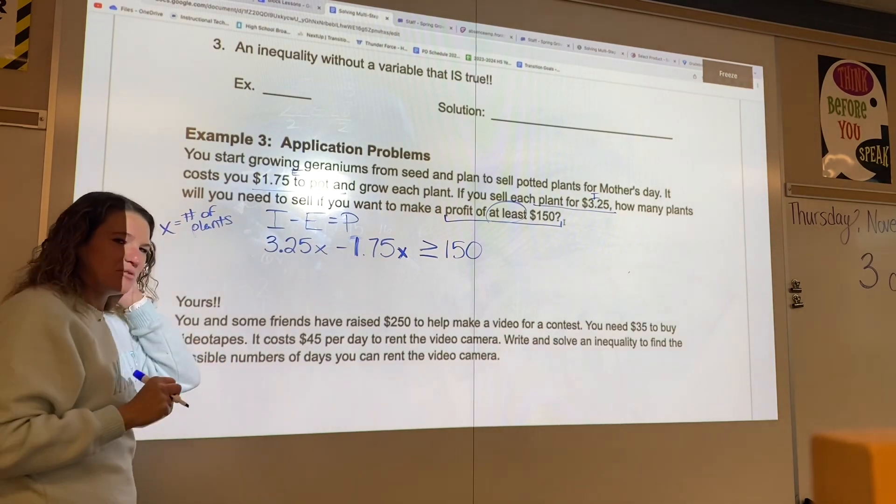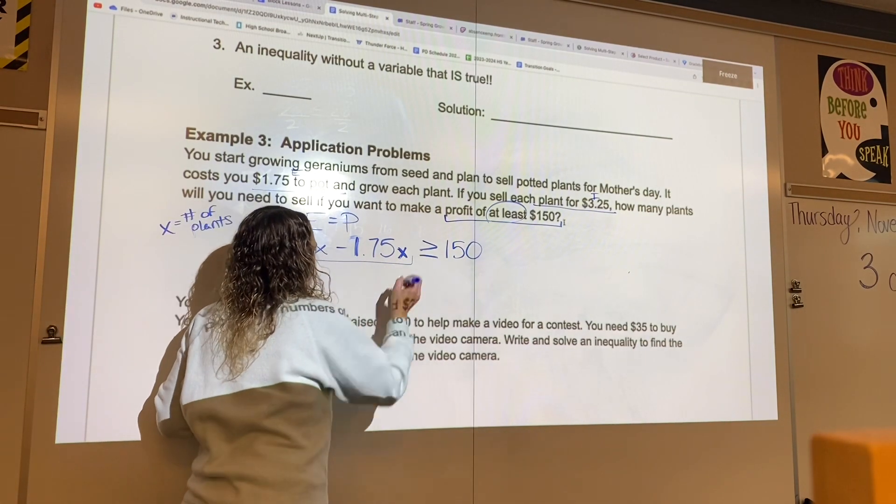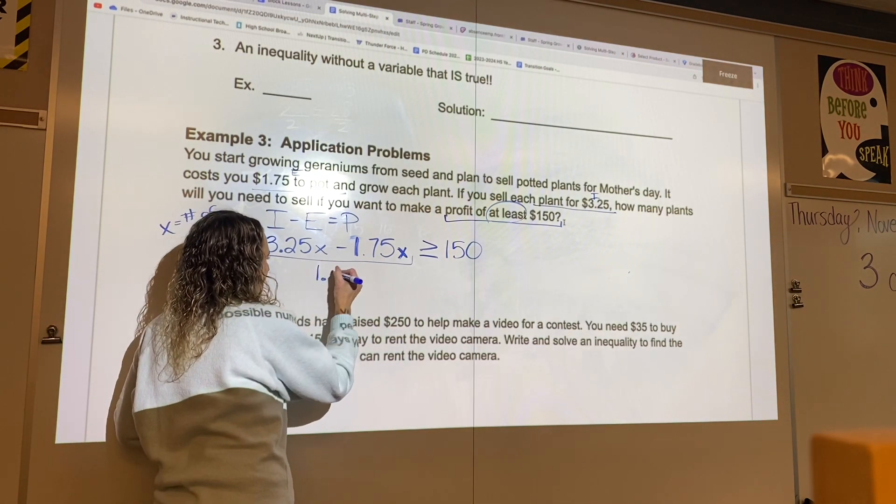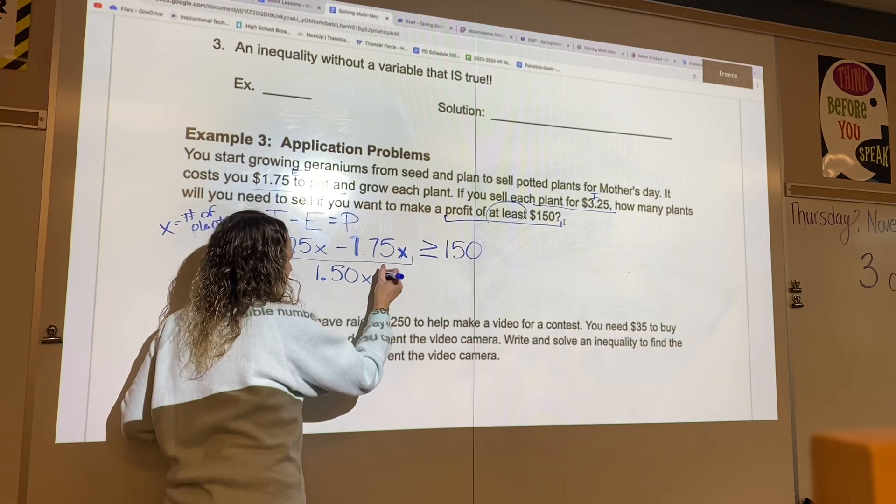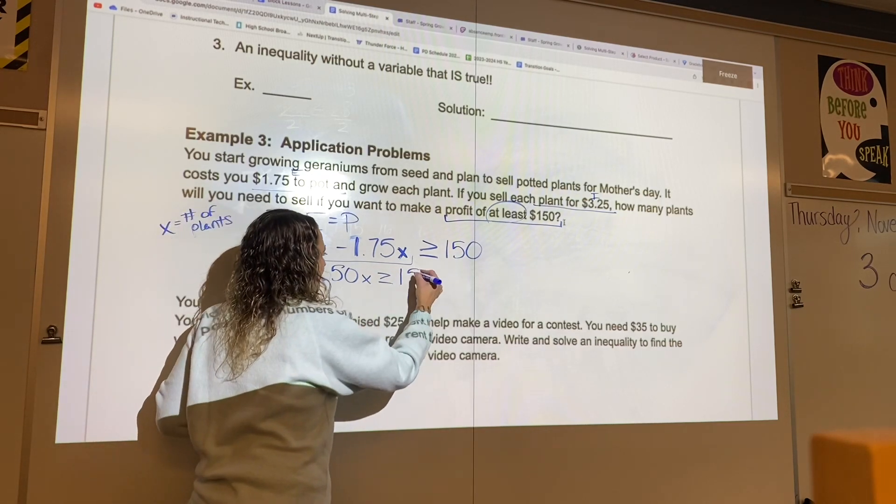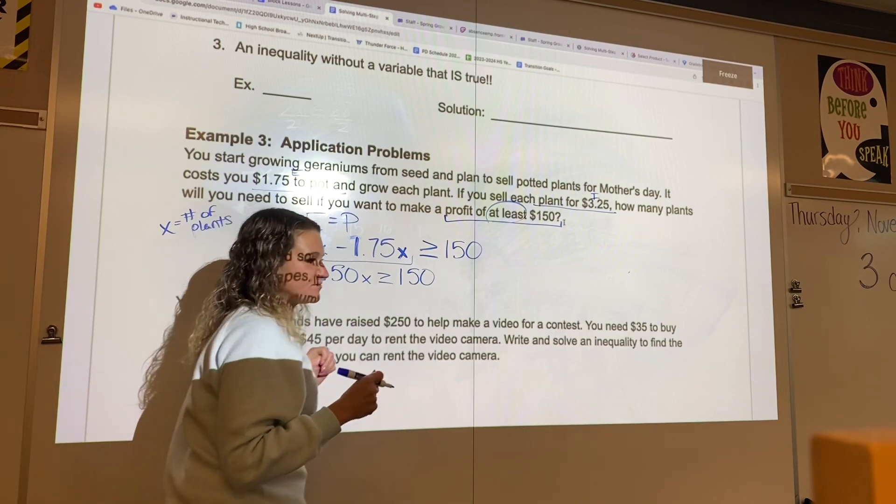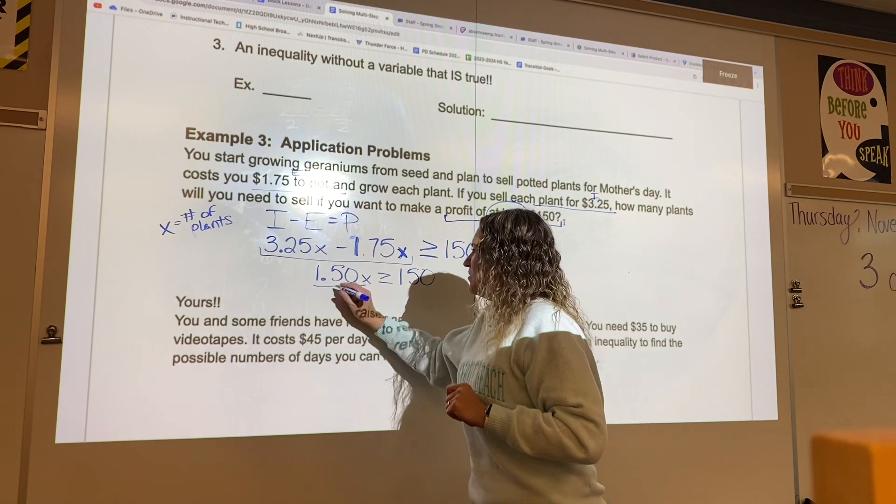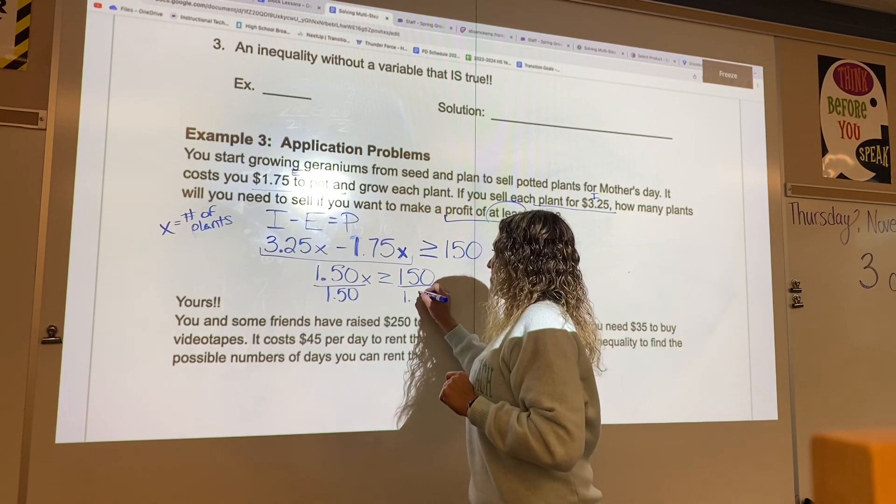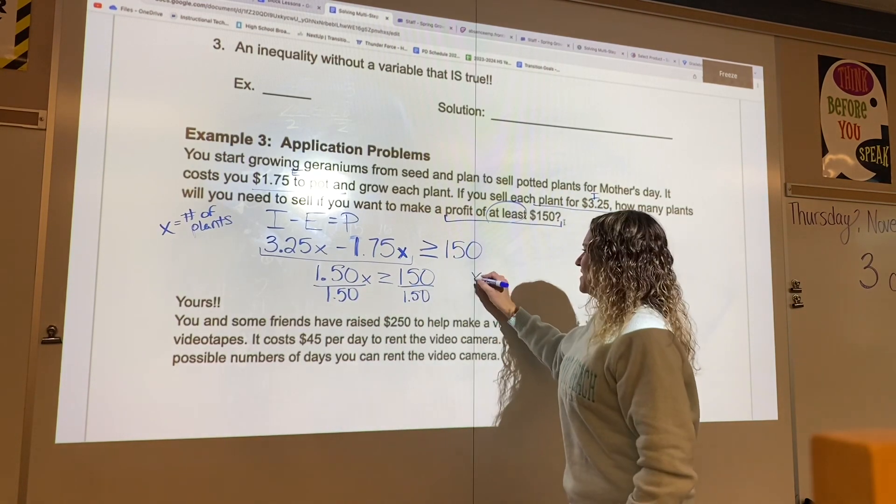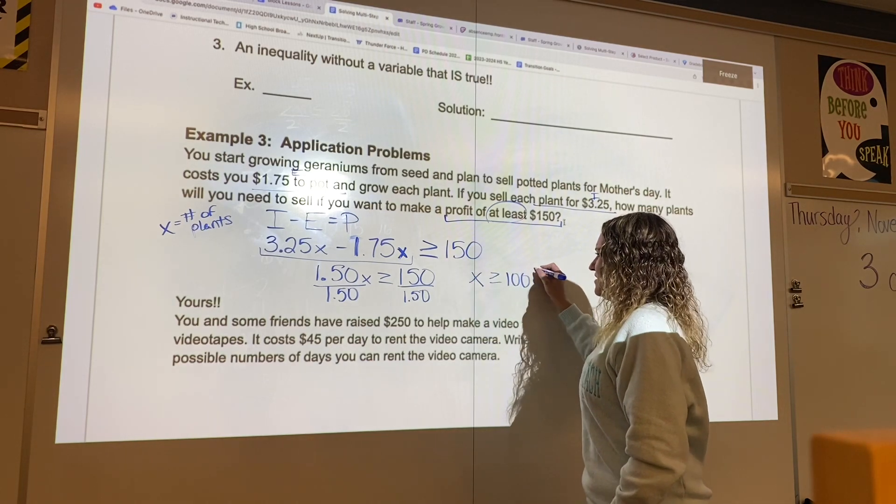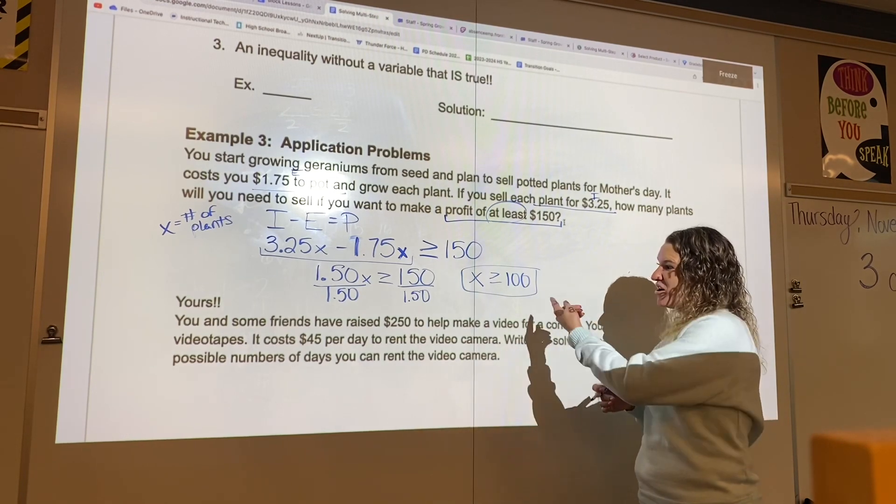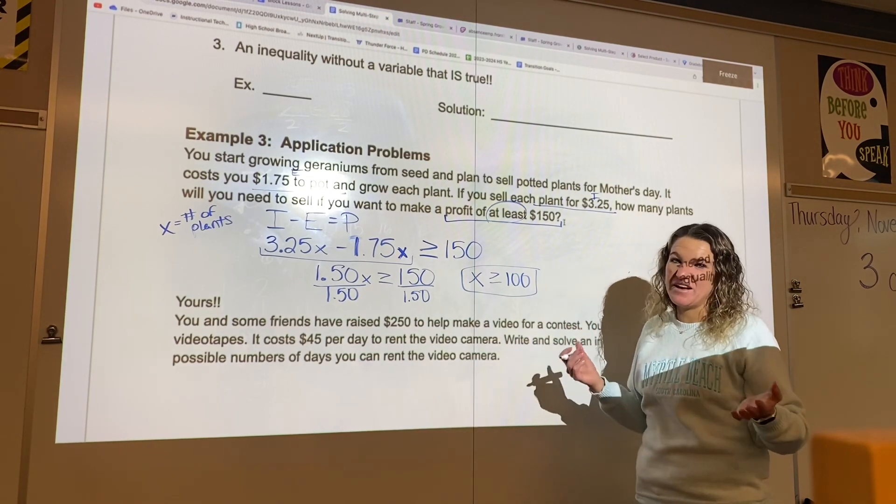All right, pretty simple. We're going to combine our terms. So $3.25 minus $1.75 would give me $1.50. Bringing down your inequality symbol and bringing down your profit. And lastly, we are going to need to divide. When we divide by $1.50 on both sides, we get x is greater than or equal to 100. So that means that we're going to have to sell at least 100 plants in order to make a profit of $150.